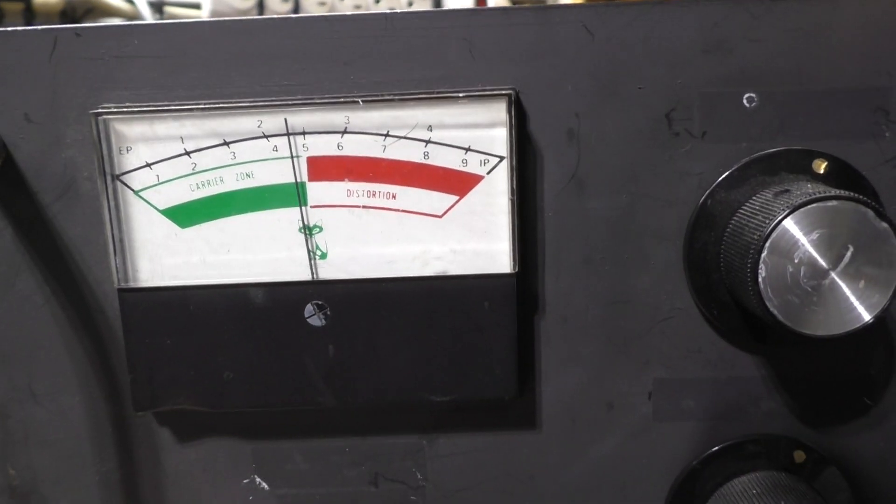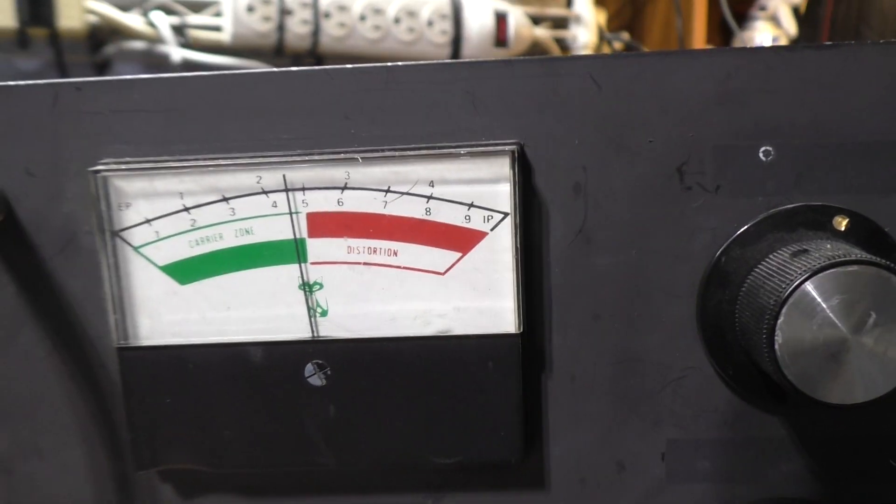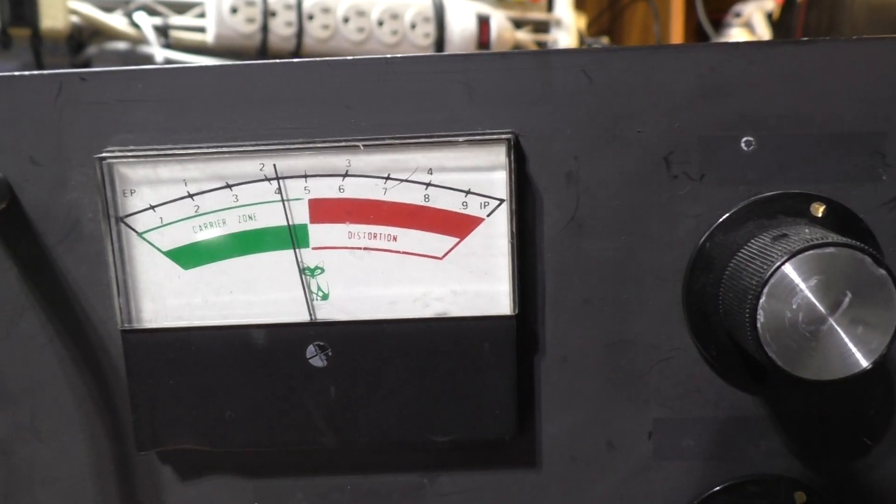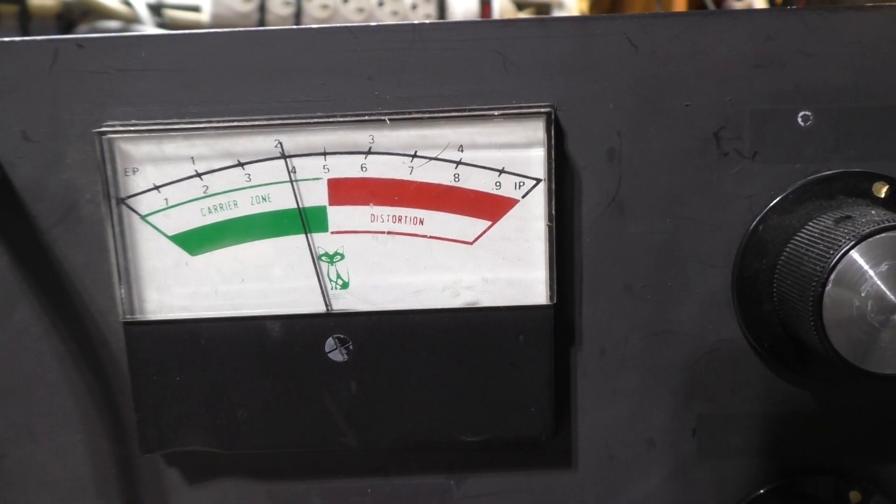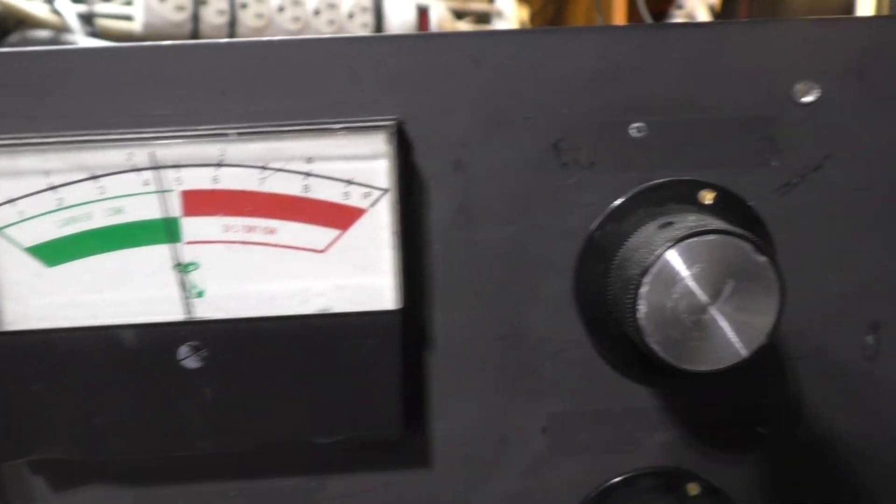And then when you key down with RF going in, it's gonna drop even more. Let's see if I can do that. I'm running out of hands here. Alright. Key down first with the foot switch. Now keying down the radio. See it drop even more. That's what's supposed to happen.